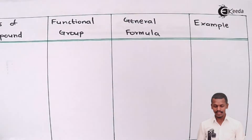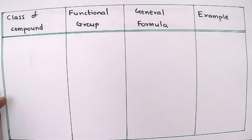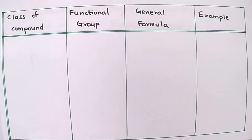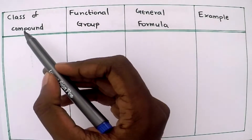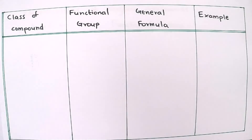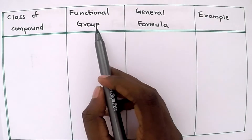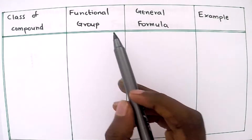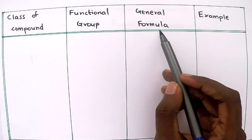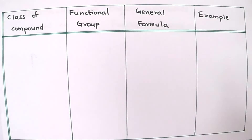I am going to divide this into four columns: the class of the compound, the functional group, the general formula, and one example to represent that particular class of compound.